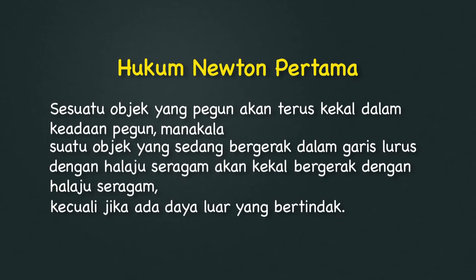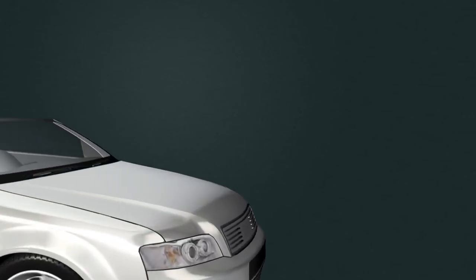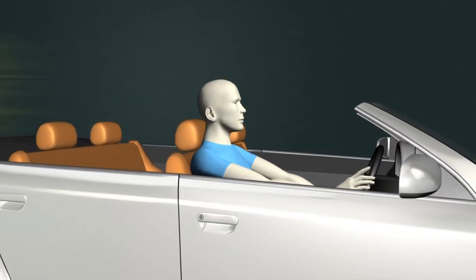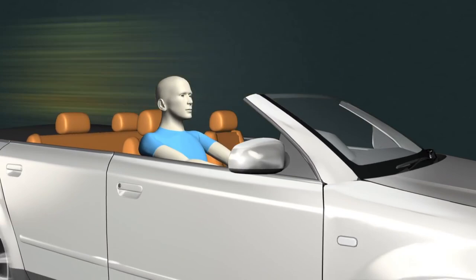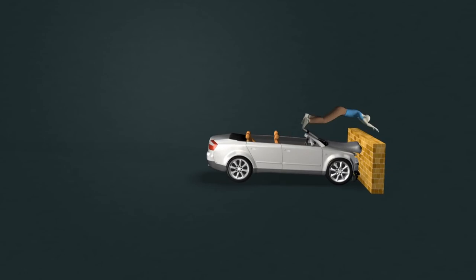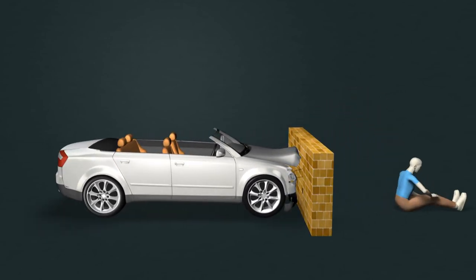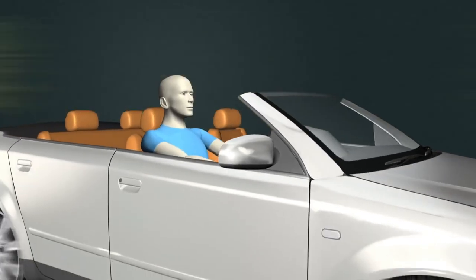Sekarang kita lihat pula bahagian kedua hukum Newton pertama. Suatu objek yang sedang bergerak dalam garis lurus dengan halaju seragam akan kekal bergerak dengan halaju seragam kecuali jika ada daya luar yang bertindak. Lihat apa akan terjadi jikalau seorang pemandu yang tidak memakai tali pinggang keselamatan berada di dalam kereta yang sedang bergerak laju terlanggar sebuah simbok. Pemandu tersebut terhumban ke hadapan, kerana pemandu itu berkeupayaan untuk terus bergerak walaupun kereta itu berhenti secara mengejut.